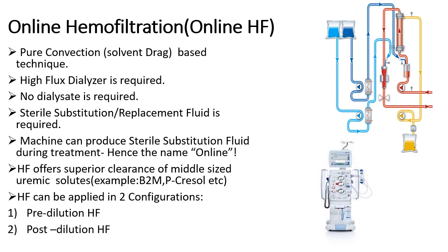In terms of clearance, online HF can remove medium to large sized uremic solutes such as beta-2 microglobulin. Haemofiltration can be applied in two configurations: pre-dilution haemofiltration, where the substitution fluid is administered just before the filter, and post-dilution haemofiltration, where the substitution fluid is administered after the filter.